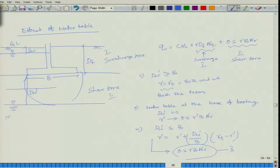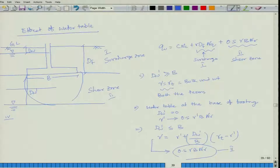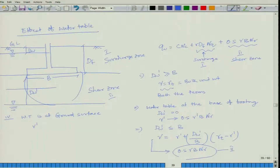Case 4: If the water table is at the ground surface, then both the surcharge zone and shear zone soils are completely submerged. In this case, submerged unit weight γ' must be used in both Zone 1 and Zone 2: q_u = c·Nc + γ'·Df·Nq + 0.5·γ'·B·Nγ.